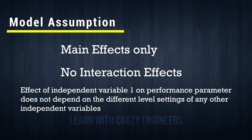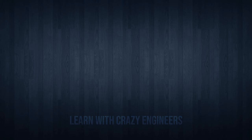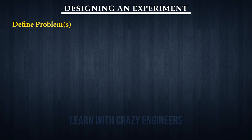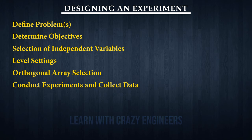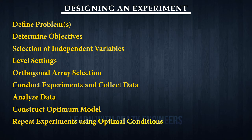The first step is to understand the procedures involved in the process. The steps are: start with selecting the problem and objectives, then make the selection of input and output variables and their corresponding levels. Using that information, the orthogonal array selection is done and data is collected from real-time experiments. We then analyze the data, construct the optimum model, and finally test the identified optimal conditions with one or more experiments for estimating the prediction error.